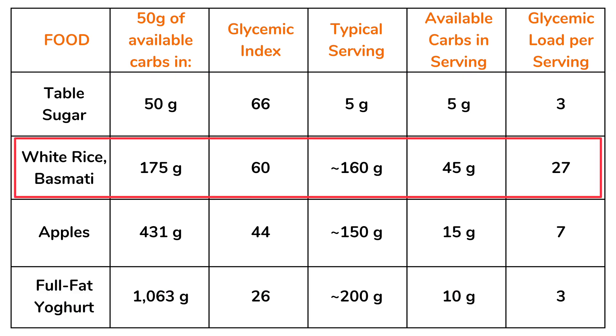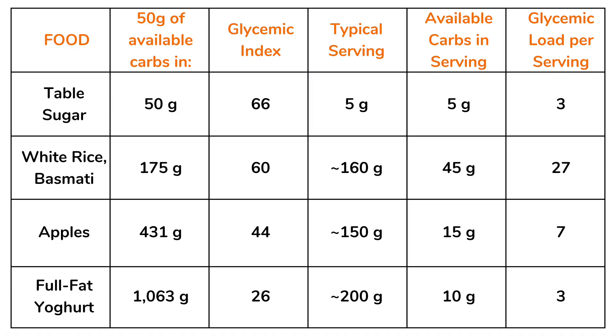For white rice, the glycemic index is 60. A typical serving size is about 160 grams, which contains about 45 grams of available carbohydrates, leading to a glycemic load of 27. The glycemic load of white rice at 27 is 9 times as much as that of a teaspoon of table sugar — meaning we can expect a similar glucose response to a serving of white rice as to 9 teaspoons of table sugar.